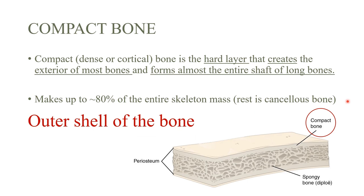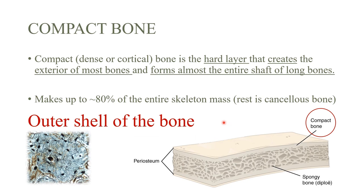Compact bone takes up almost 80 percent of the entire skeleton mass, and the rest is spongy or cancellous bone. This is the histological picture of compact bone. If you want a video on histology — which covers micro or cell anatomy — please comment down below.